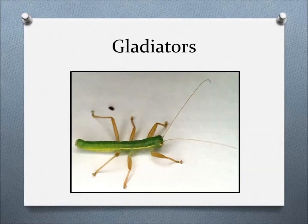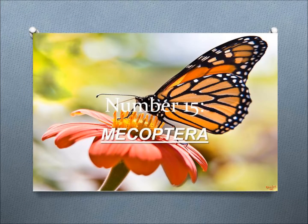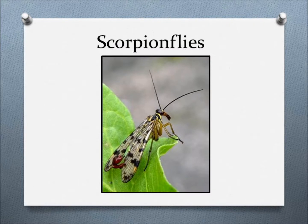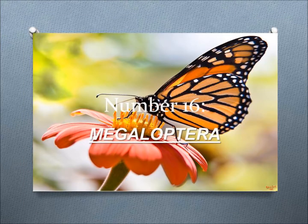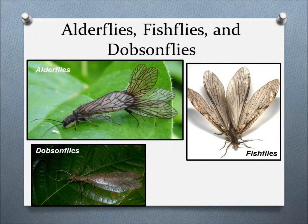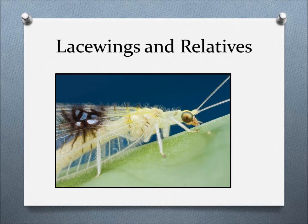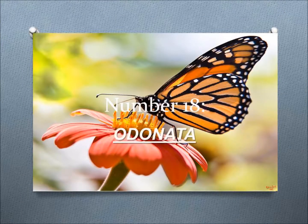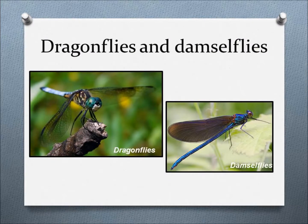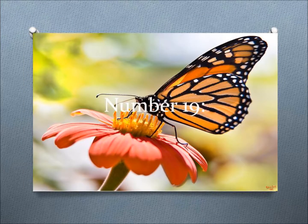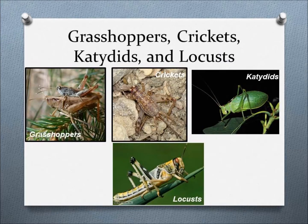Number 14: Mantophasmatodea — example: Heelwalkers or Gladiators. Number 15: Mecoptera — example: Scorpionflies. Number 16: Megaloptera — example: Alderflies, Fishflies, and Dobsonflies. Number 17: Neuroptera — example: Lacewings and Their Relatives. Number 18: Odonata — example: Dragonflies and Damselflies. Number 19: Orthoptera — example: Grasshoppers, Crickets, Katydids, and Locusts.